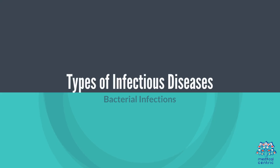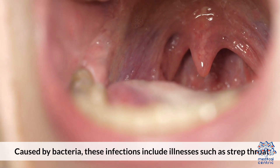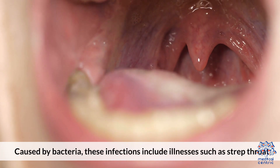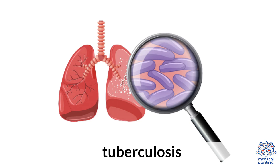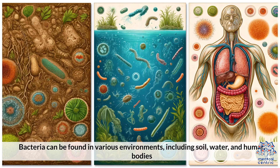Types of Infectious Diseases. 1. Bacterial Infections: Caused by bacteria, these infections include illnesses such as strep throat, tuberculosis, and urinary tract infections (UTIs). Bacteria can be found in various environments including soil, water, and human bodies.